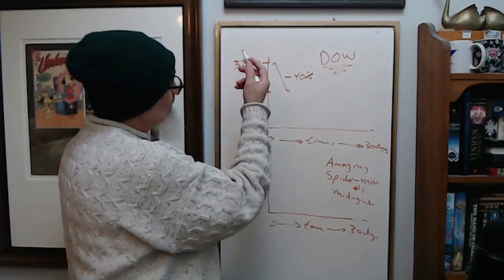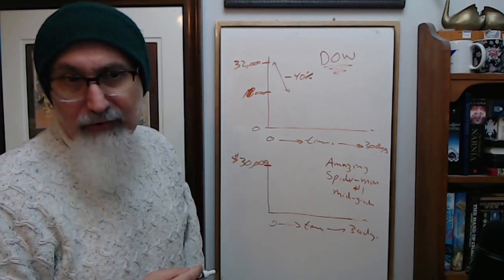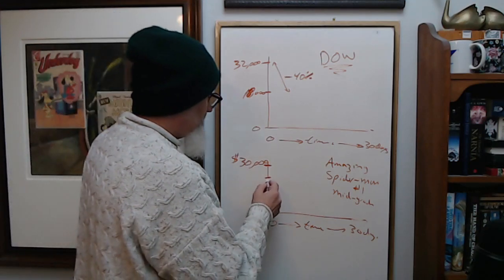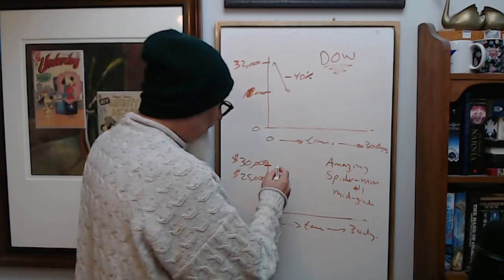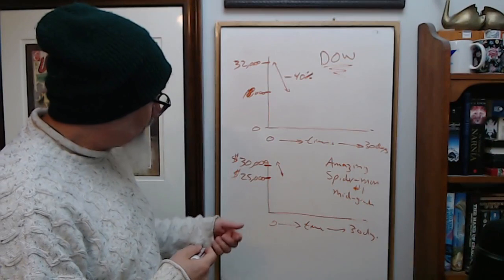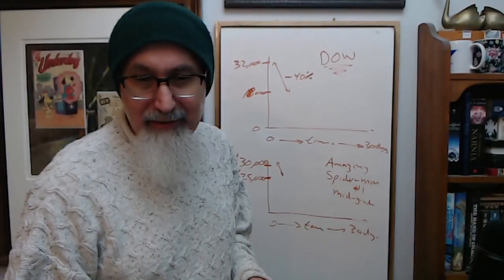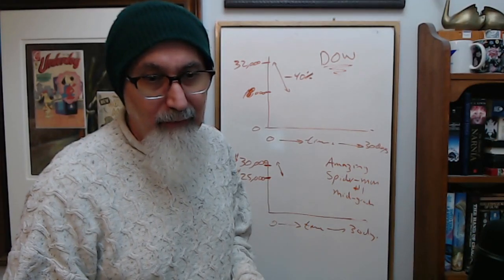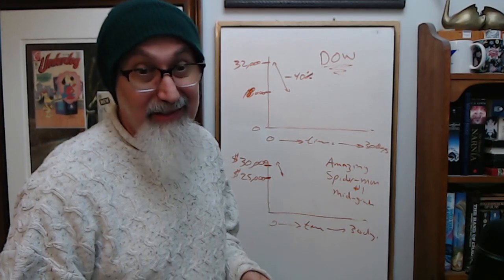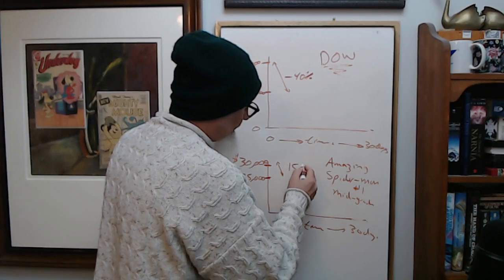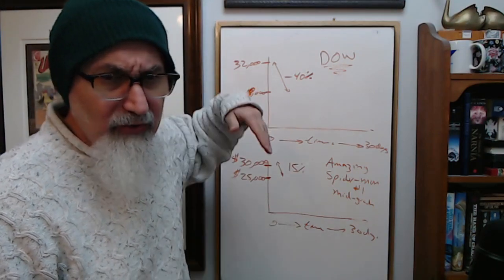Amazing Spider-Man, I forget what it was going for. Like 30 grand, let's say it was 30 grand. Amazing Spider-Man number one didn't drop 40%. It came down to around $25,000. That's a 5,000 drop. 1 divided by 6, so it dropped like 16%. Let's call it 15%. It dropped 15% in value. At the same time, the Dow Jones was dropping 40%, nosediving.